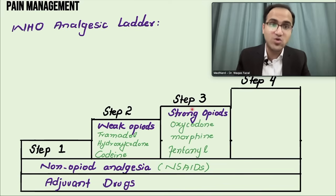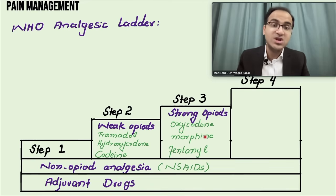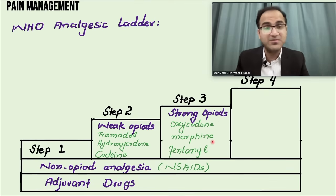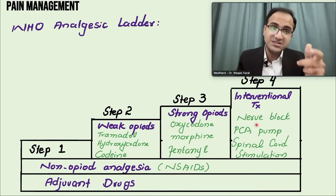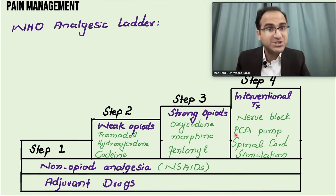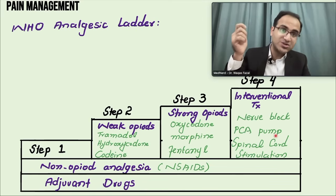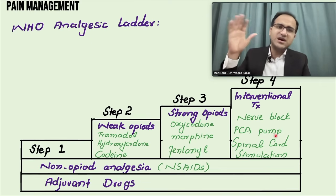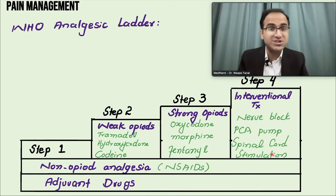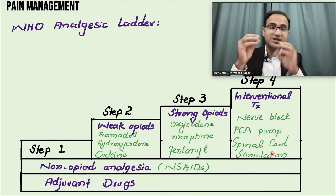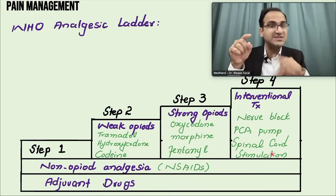In step three, if pain is not controlled with weak opiates, you move to strong opiates including oxycodone, morphine, and fentanyl. In step four, if pain is not controlled by all these strategies, you use more invasive interventional methods such as nerve blocks, patient-controlled analgesia pumps with IV infusions where the patient initiates the infusion when in pain, and spinal cord stimulation for chronic neuropathic pain.